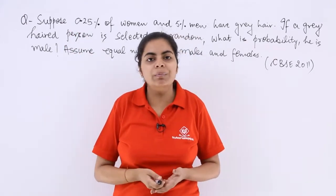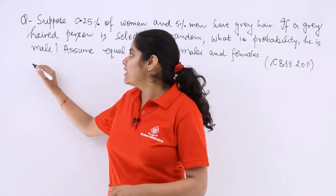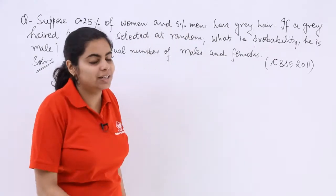Now what is the probability if a grey haired person is chosen at random, he should be a male. Okay, let me write solution and make things clear to you. I am not going to write the whole thing. Just let me explain.